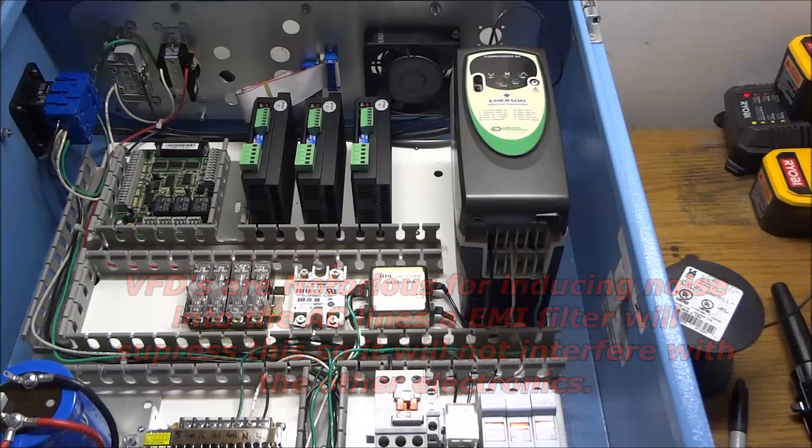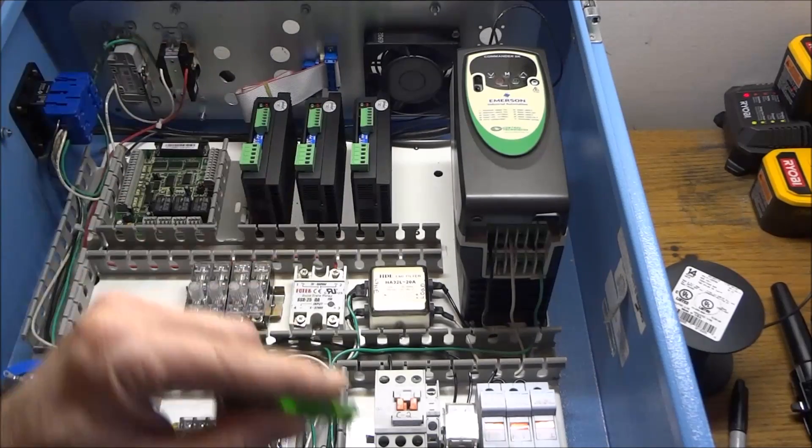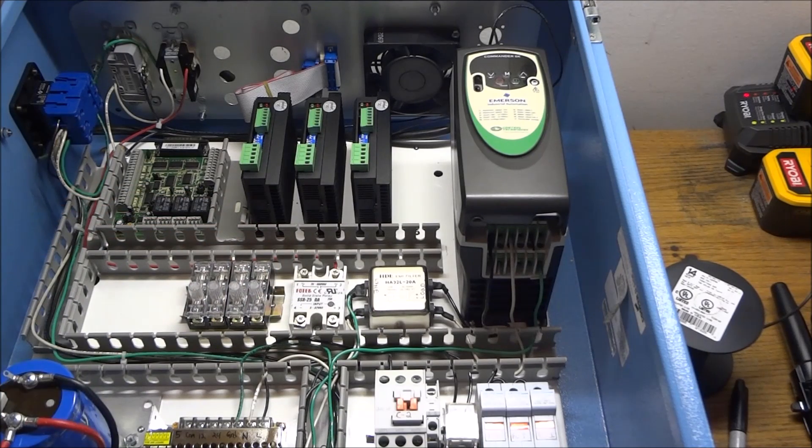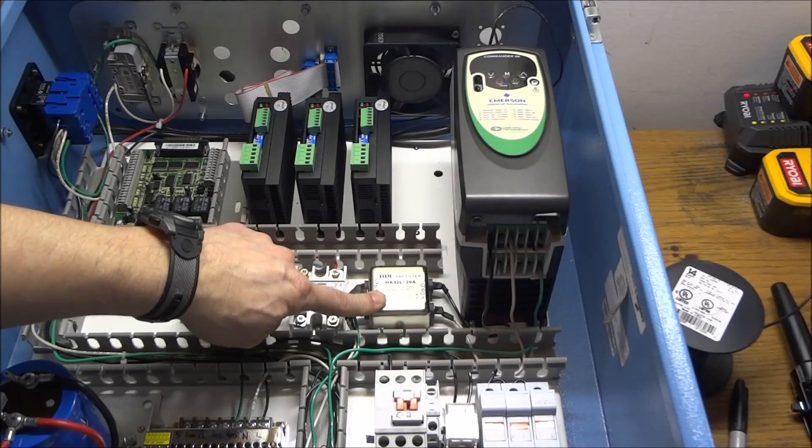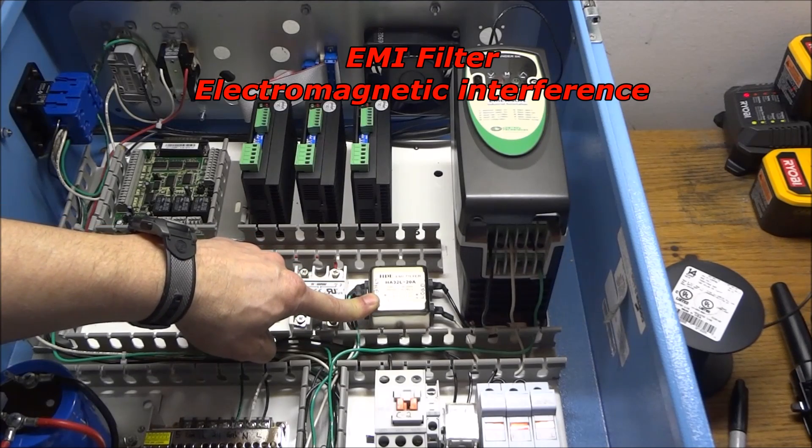VFDs will generate electromagnetic interference. And when they do, what happens is this interference goes out to the motor, comes back through the ground circuit, and tries to find the source of the interference which is your VFD. And what happens is that bleeds upstream to all the other components in the system and it can cause you problems. So if you've got a VFD, pick yourself up one of these EMI filters.